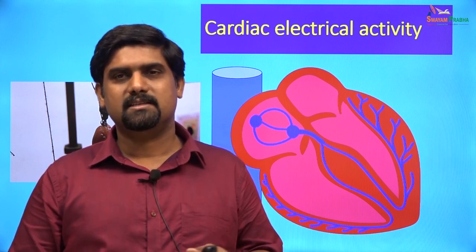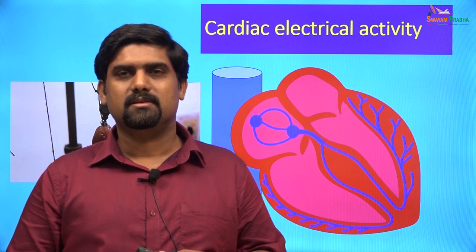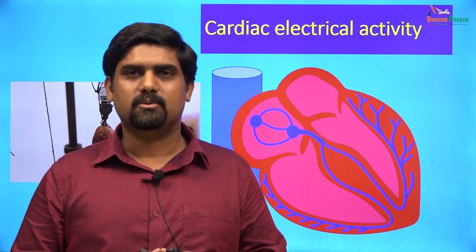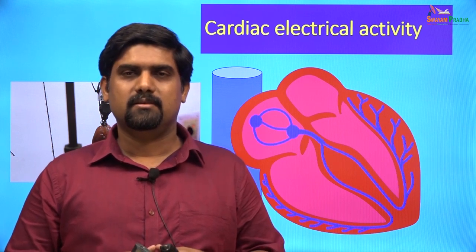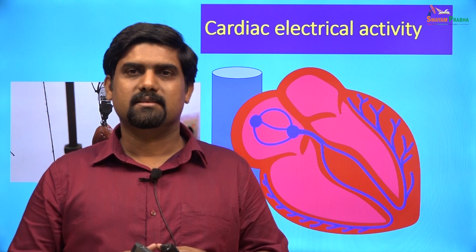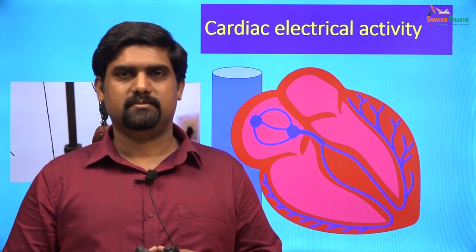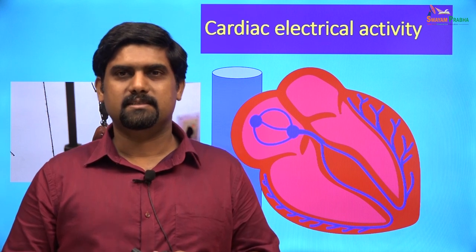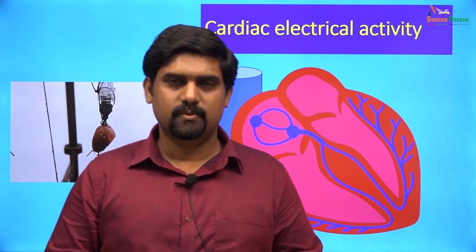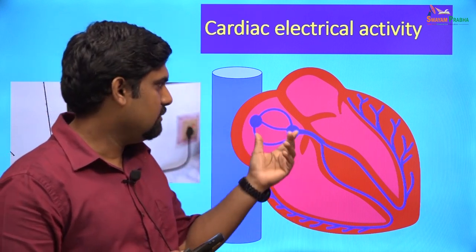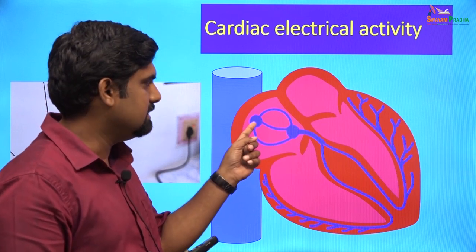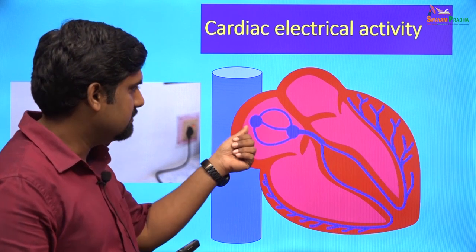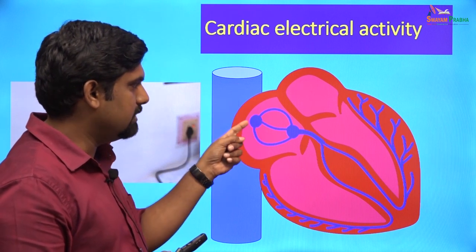The heart is capable of automaticity as well as rhythmicity. This automaticity originates in the SA node. The SA node is located in the right atrium, on the posterior wall close to the opening of the superior vena cava. The impulses from the SA node can then pass to the AV node by internodal tracts, or they can also spread to the atrial muscle and finally reach the AV node.